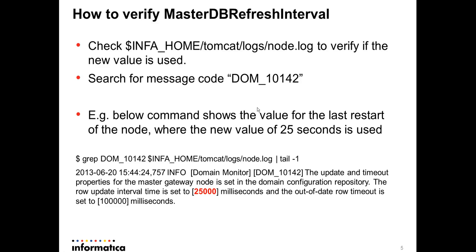You need to search for message code DOM_10142. Here I have an example where I grep for this message code in node.log and can see the value set in admin console — 25 seconds — has been picked up. By default the row update interval time is 8,000 milliseconds, and now because it's been modified it shows 25,000. This helps ensure there are no typos or configuration errors when setting master db refresh interval.